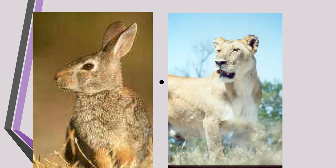Likewise, if a person is sitting in front of this screen looking at a dot in the middle, and images are flashed up for a moment so that the eyes can't wander from side to side, and they're asked what they see, they will respond that they see a lion. But then when asked to draw what they saw with their left hand, they will draw a rabbit.